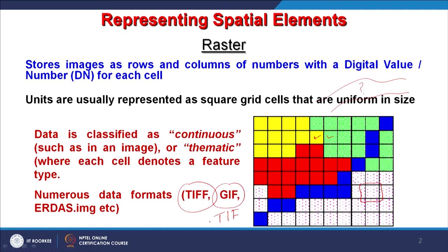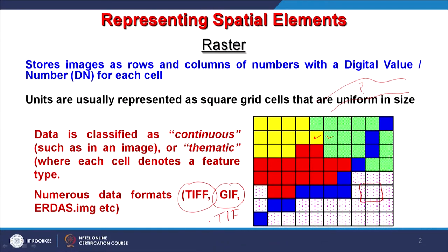GIF format is used for animated files — the animated images you see on the internet, WhatsApp, or social media platforms use this format, and tools are available to create GIF files. TIF does not allow animated files. Another very popular raster format for image data is ERDAS Imagine (.img), which is compatible with many GIS and digital image processing software packages. Tools in most good software also allow conversion from one format to another.